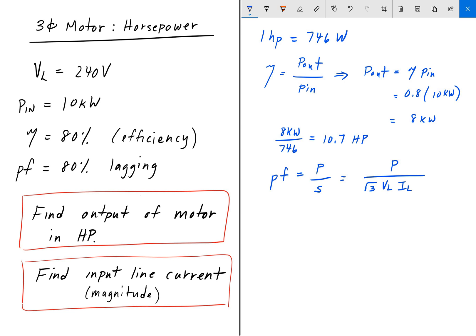And so we can rearrange this formula here to solve for the line current, I L. And that comes out to P over the square root of 3, V L, times the power factor.